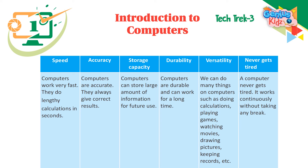Accuracy: Computers are accurate. They always give correct results. Storage Capacity: Computers can store large amounts of information for future use. Durability: Computers are durable and can work for a long time. Versatility: We can do many things on computers such as doing calculations, playing games, watching movies, drawing pictures, keeping records, etc.